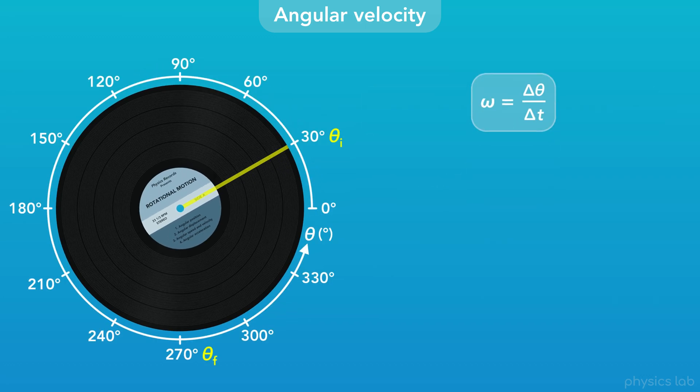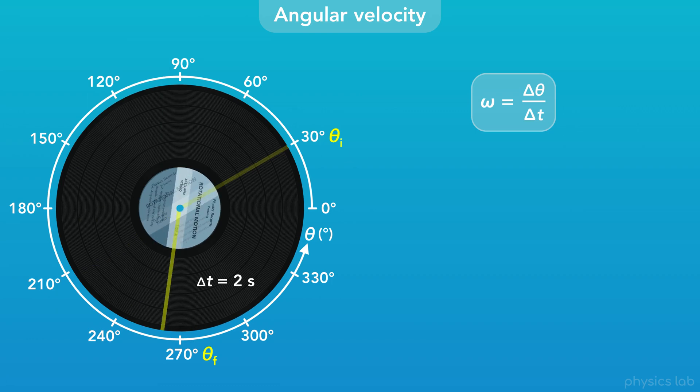Here's an example. This record starts at an angular position of 30 degrees. The record rotates for 2 seconds and ends up at a final angular position of 270 degrees.